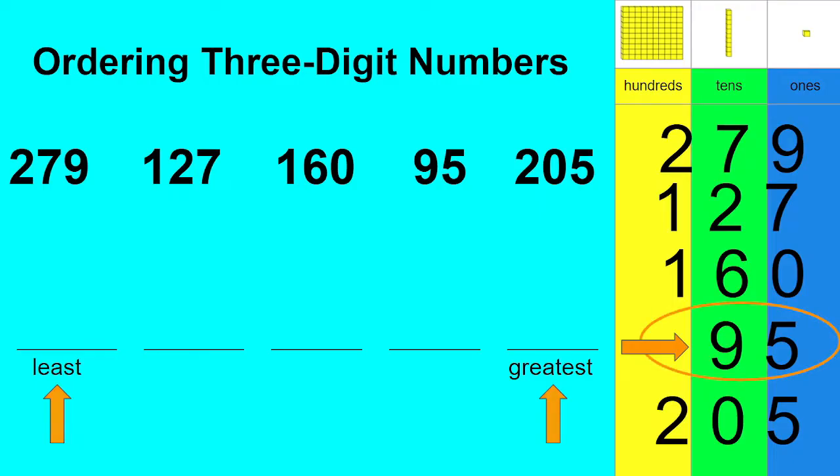We're going to move the number 95 and put it right here at the beginning of our line because that shows that it's the least. Now I'm going to cross 95 off of our list because we've already used that one.